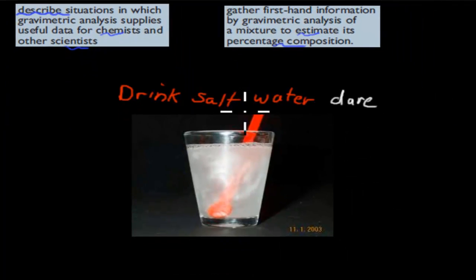I'll start with why would we want to find out what the percentage component, or what is inside, for example, substances or compounds or mixtures. So if, for example, someone gives you a dare, so the dare is to drink salt water, and he says you get 100 bucks if you drink this cup of salt water.